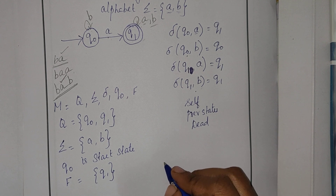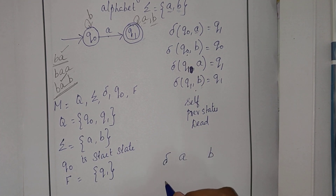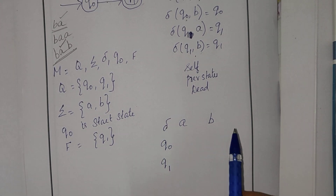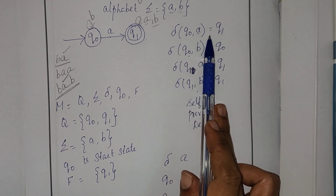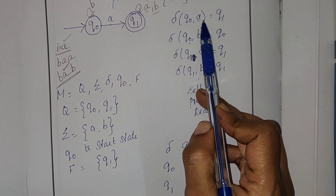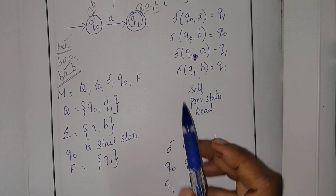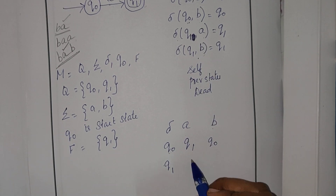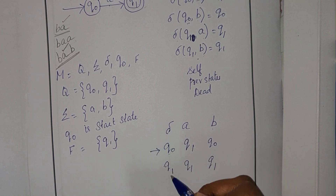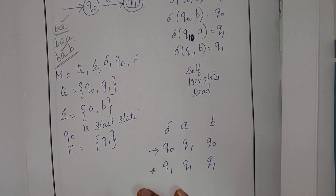Now I write my transition table. The columns are the alphabets and the rows are the states. Q0 on A moves to Q1; Q0 on B moves to Q0; Q1 on A moves to Q1; Q1 on B moves to Q1. I mark the start state and final state notation. This is the end of the answer. We will discuss one more sum.